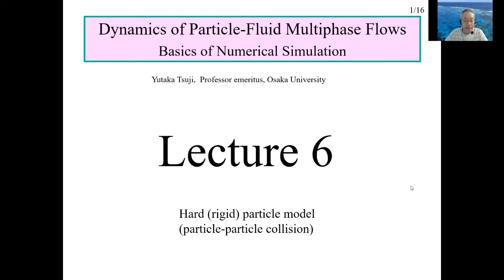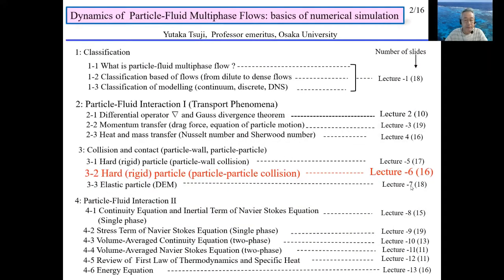Lecture 6 covers particle-to-particle collision. First, the relation between the pre- and post-collision velocity of two collision spheres is described. Second, the methods for finding a collision partner are explained. The method is classified into the deterministic method and the stochastic method. Finally, an example of calculation is shown.